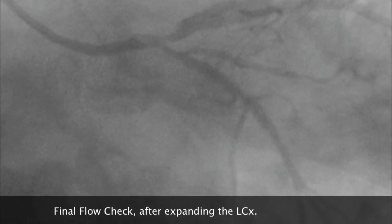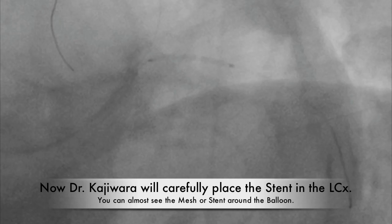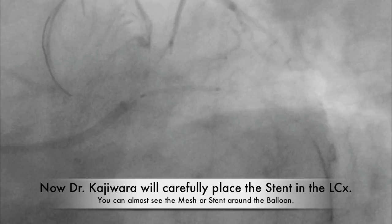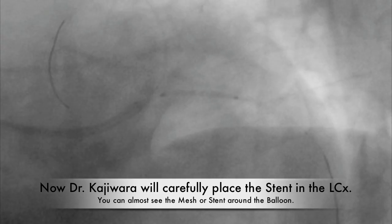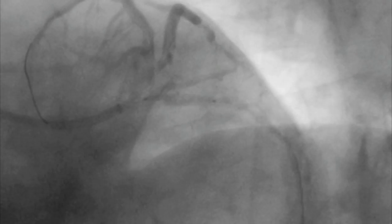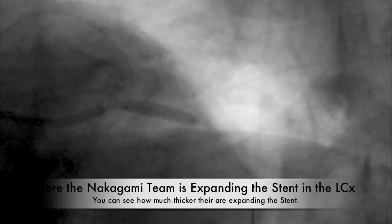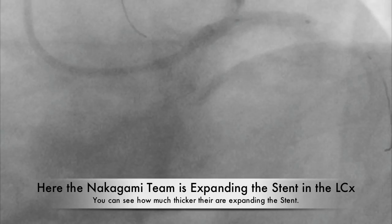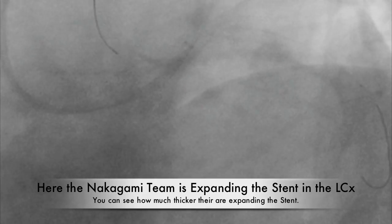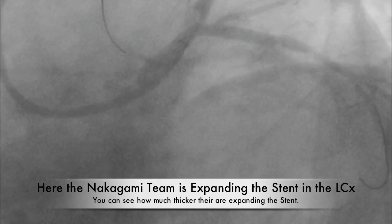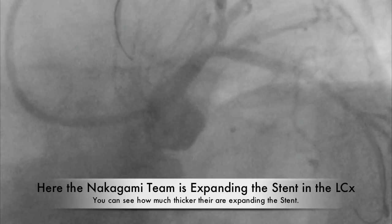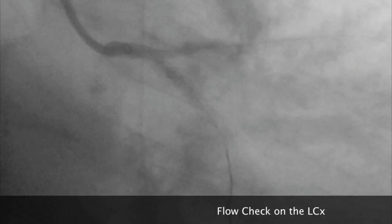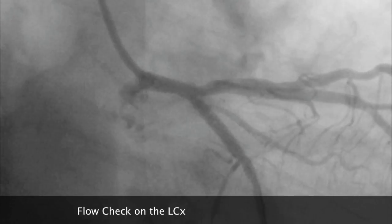There's a final flow check after they expanded the LCX. Now Dr. Kajiwara carefully places the stent in the LCX — you can kind of see a mesh on the balloon itself before they start expanding it. The Nakagami team is now expanding out the stent on the LCX. You can see how much thicker it's getting and staying with the stent in place. They're expanding the stent one more time, then doing a flow check — it looks much thicker now.